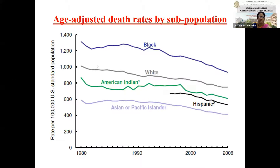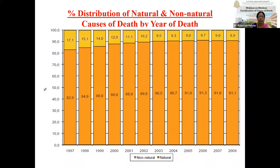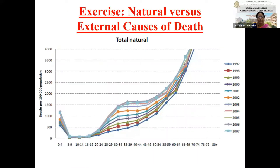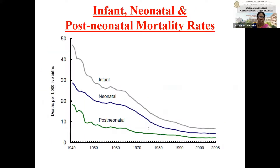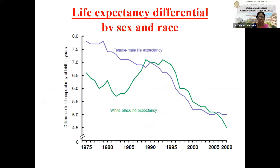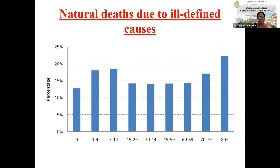A line chart shows the age-adjusted death rate by subpopulation, with trends visible over different years. A proportional bar chart shows the distribution of natural and non-natural causes of death by year. An age-wise graph compares natural versus external causes of death. Life expectancy differential by sex and race is also shown, along with natural deaths due to ill-defined causes represented in a simple bar chart.